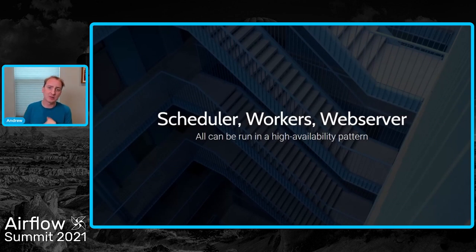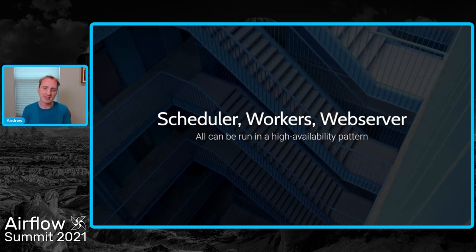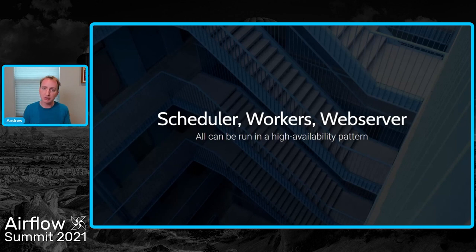As of Airflow 2.0, all three main moving pieces can be run highly available. The scheduler, as of 2.0, is highly available - you can run as many as you like and it uses row locking in the database to ensure none step on each other. Workers by their very nature you run many of them. The web server is stateless, so you can run as many as you like and scale them in the traditional web server fashion. A lot of Airflow's architecture is by its nature highly available. The database is the one thing that isn't, but running an active-passive setup for databases is a reasonably well-understood pattern.